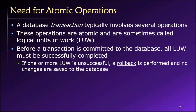If I have a transaction that involves five different operations — maybe two updates, two inserts, and a delete — the database treats that set of five operations as one atomic logical unit of work. Every single one of those steps must be successful in order for the entire transaction to be successful. If any one of those steps is unsuccessful or fails, then the entire transaction is undone. It's like it never happened.